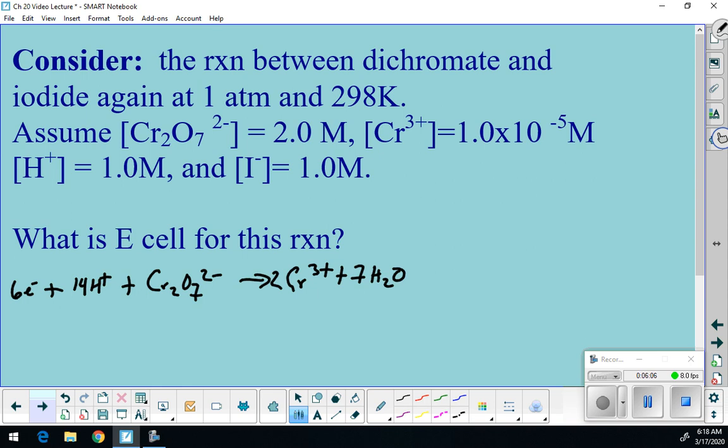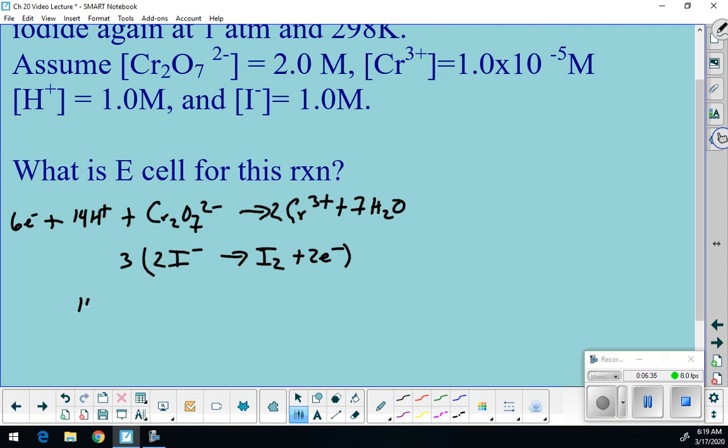And then my iodine has to oxidize. So that would mean I'd have my I minus 2 of them going to I2 plus 2 electrons. Yeah, I kind of buy that. And let's see, I have negative 2. I have my electrons on the opposite side, so I'm going to have to multiply this by 3. And then what happens? I get 14 H pluses plus dichromate plus 6 I minuses yields 3 I2 solid plus 2 chromium 3s aqueous plus 7 H2O liquids. There we go. So that would be my balanced equation.